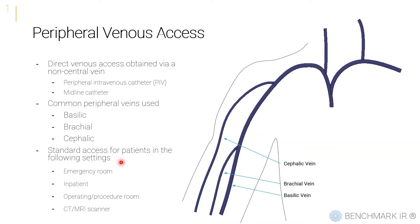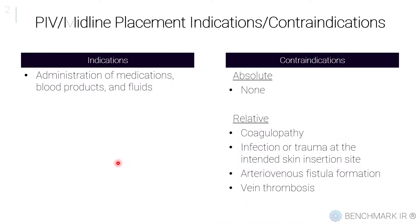If patients are getting a CT or an MRI done and receiving IV contrast, typically you're going to use a peripheral IV for that. Some of the indications for placing a peripheral IV or a midline include administering medications, giving blood products such as transfusing red blood cells or platelets, or if you need to give fluids. There are no absolute contraindications to placing a peripheral IV or a midline. Some relative ones to consider on a case-by-case basis include if the patient has a coagulopathy or if there's an infection or trauma at the intended skin insertion site.